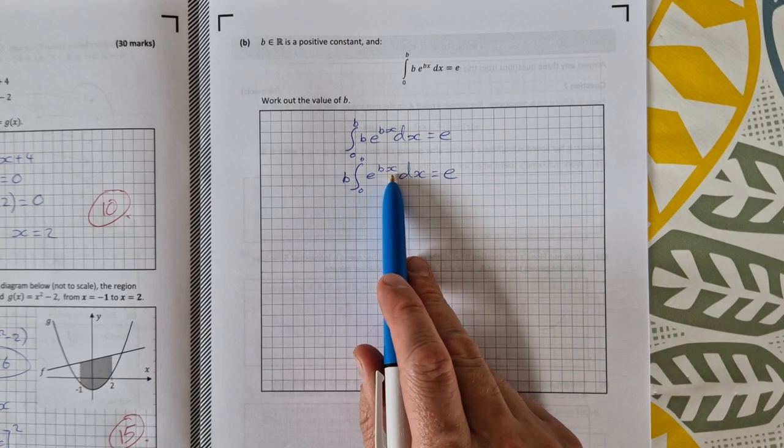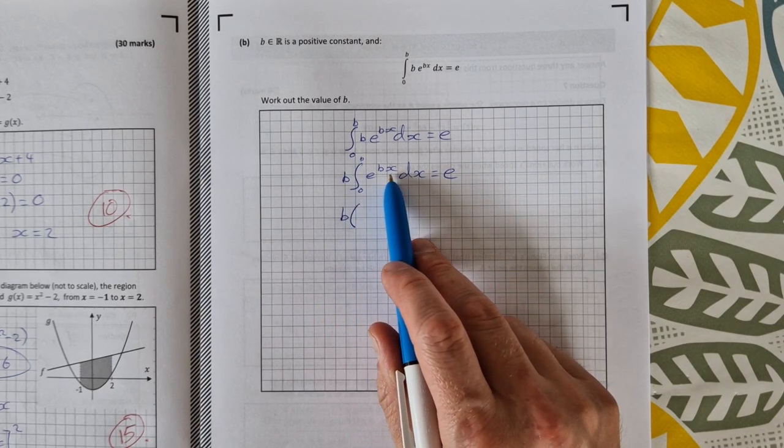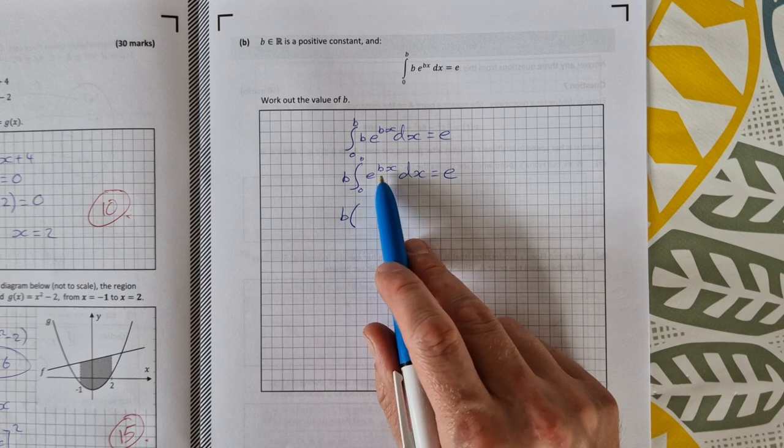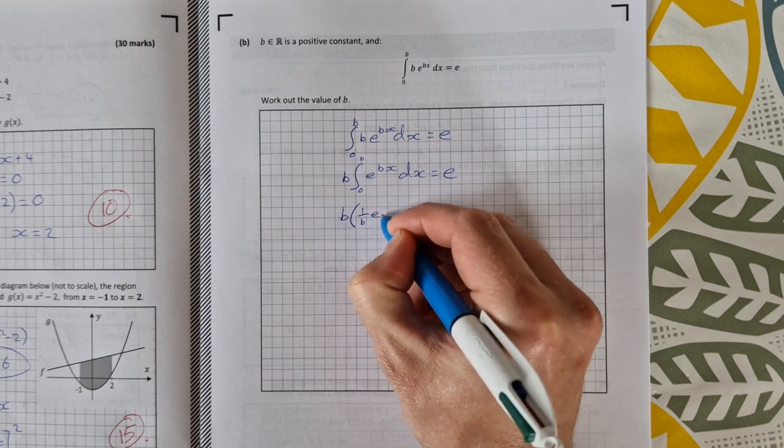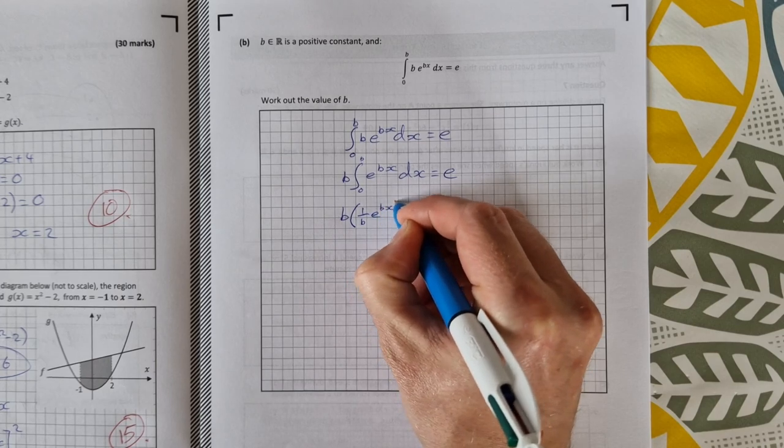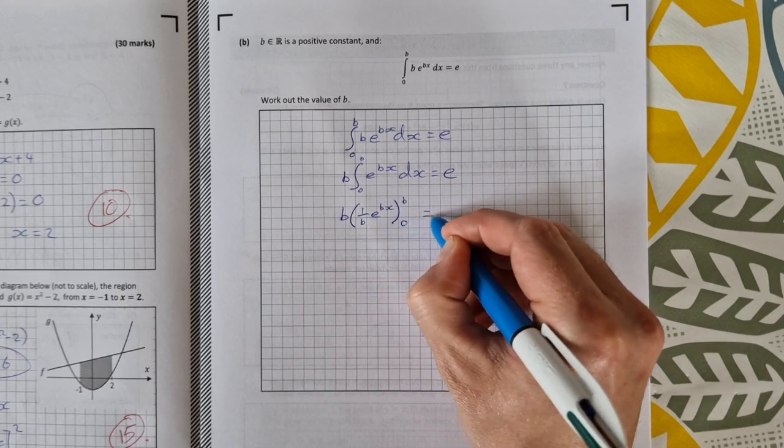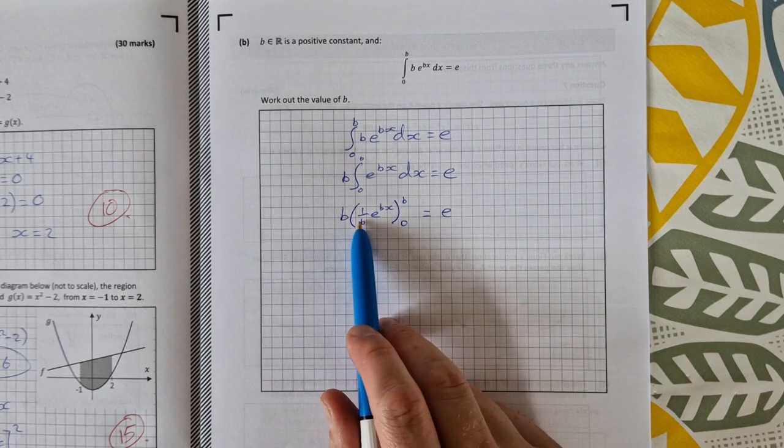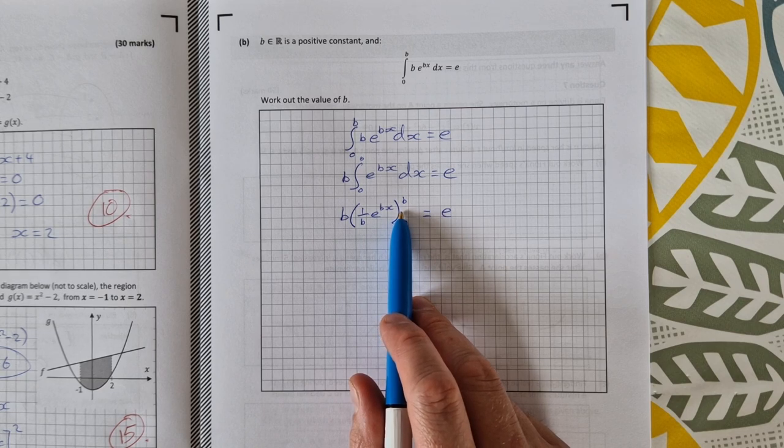Now we're able to integrate this e^(bx). So it's going to be b times, if I integrate e^(bx) I get from the log tables (1/b)e^(bx). So (1/b)e^(bx), and that's evaluated between 0 and b, and it's still equal to e.